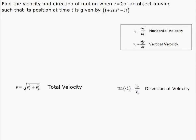In this example we're going to find the velocity and direction of motion of an object that's moving with curvilinear motion, meaning we have the path defined by the x coordinate and the y coordinate.